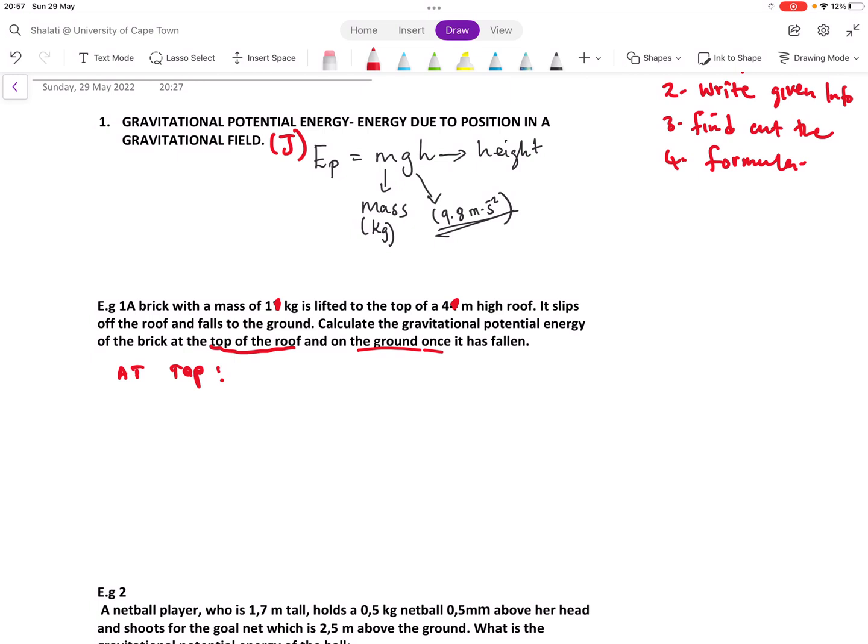Let's write down what we have at the top. We already know the mass of the brick, which is one kilogram. What else do we know? The height at the top, which is four meters. And we already know g is 9.8 meters per second squared. We can simply calculate our gravitational potential energy at the top. Every time you do calculations, you must start with a formula. I will write down the formula, then I can substitute the information that's given.